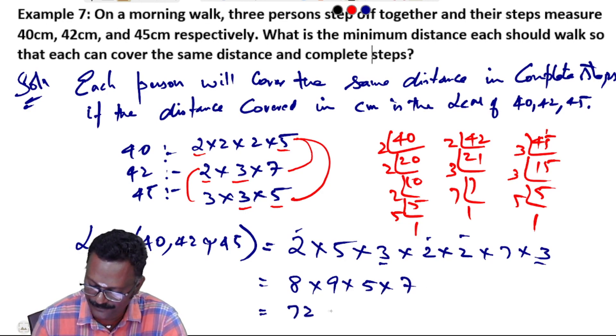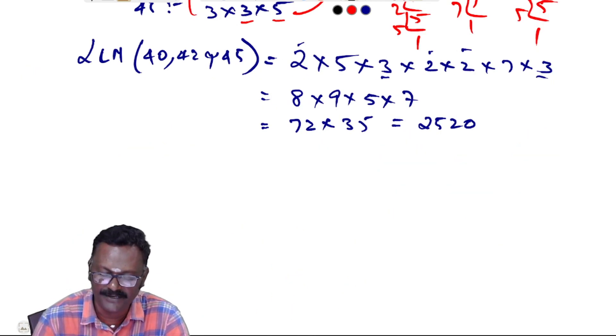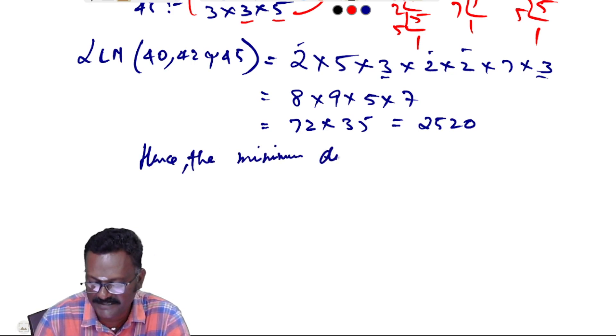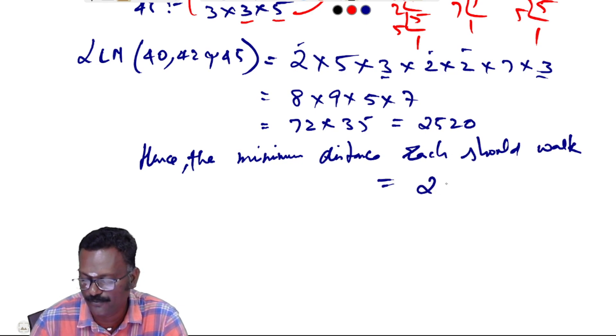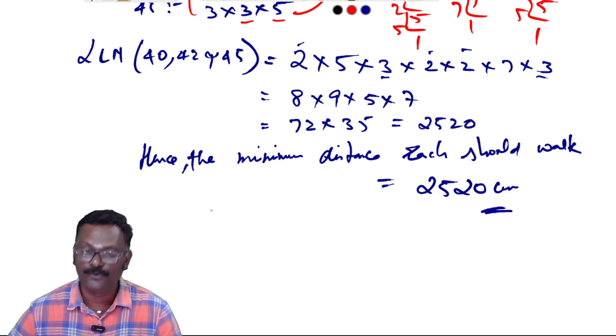8 times 9 is 72, into 7 is 504, into 5 is 2520. Final answer. Hence, the minimum distance each should walk equals 2520 centimeter. 2520 centimeter is the answer. Thank you.